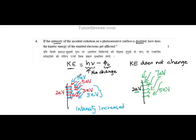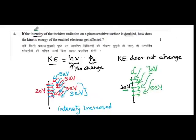So simply increasing the number of incident photons, or increasing the intensity of the incident beam, will not increase the kinetic energy of the emitted photoelectrons.